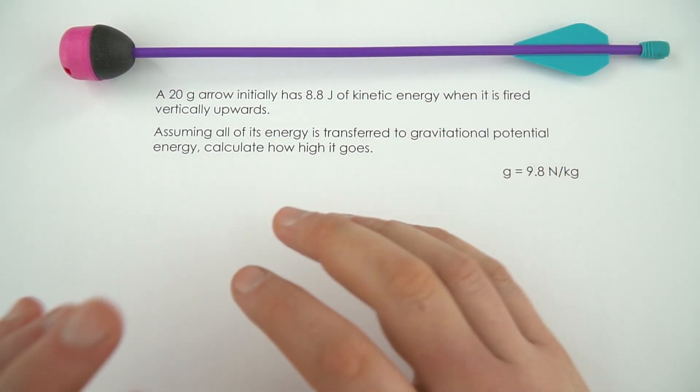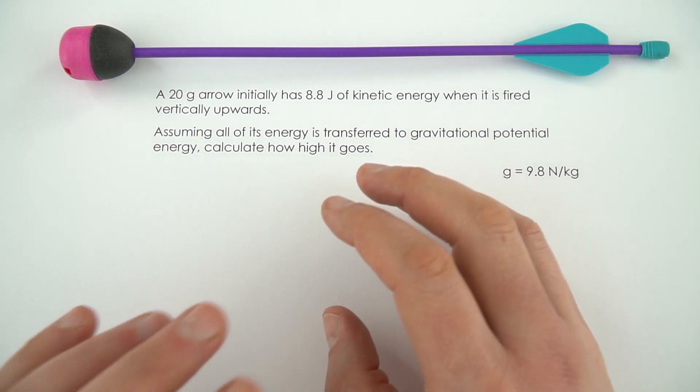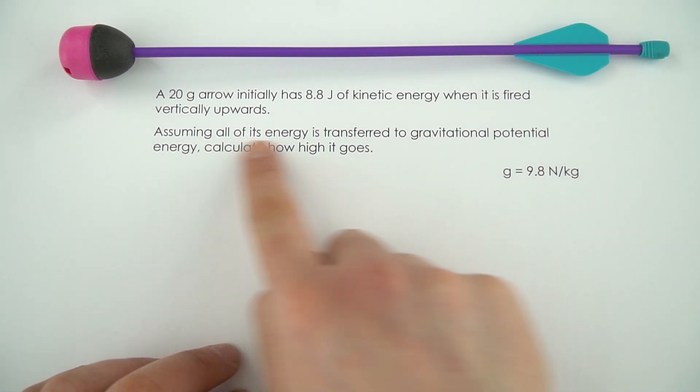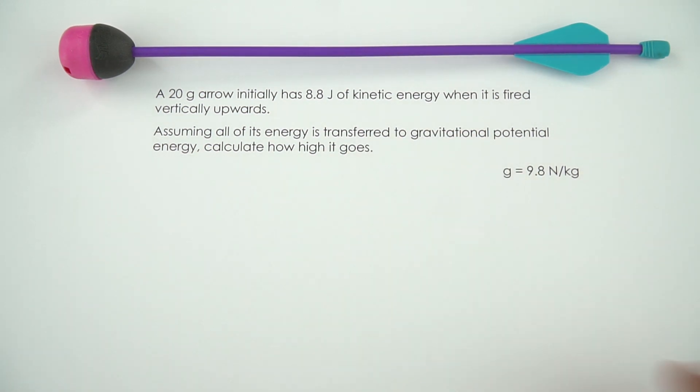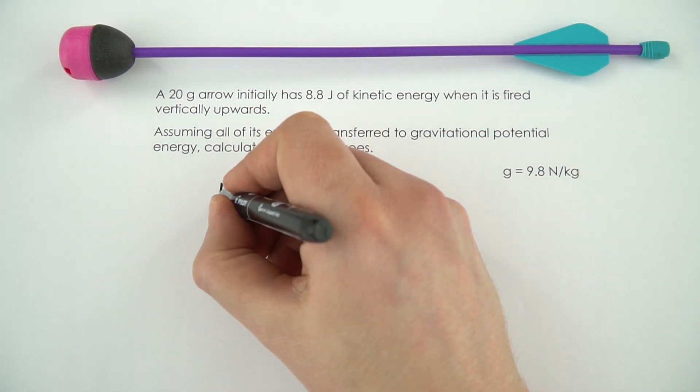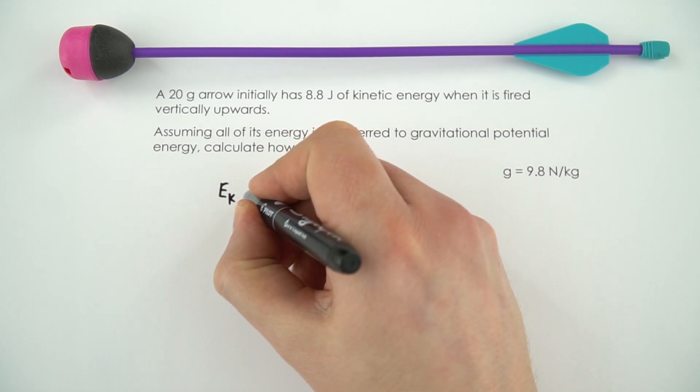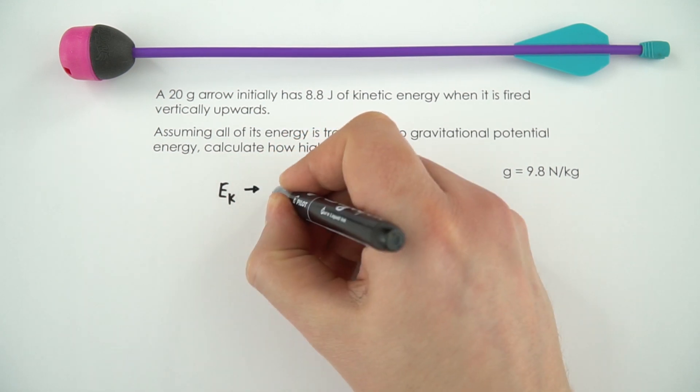Remember that energy can't be created or destroyed, just transferred from one store to another. We're going to assume that all of its energy is transferred to gravitational potential energy, so there's no energy lost to the surroundings. What we can say is that the kinetic energy it had at the beginning has all been transferred to gravitational potential energy at the end.